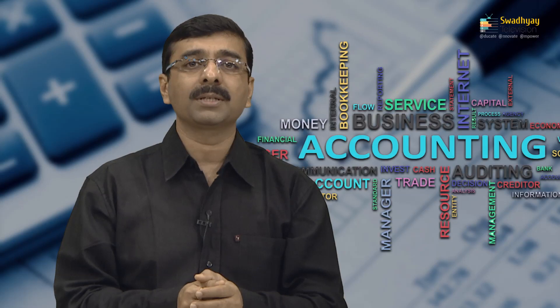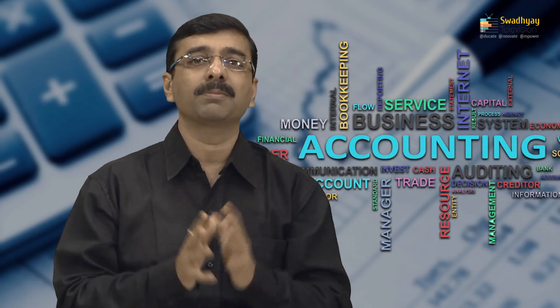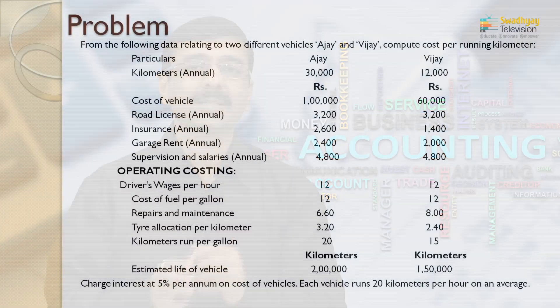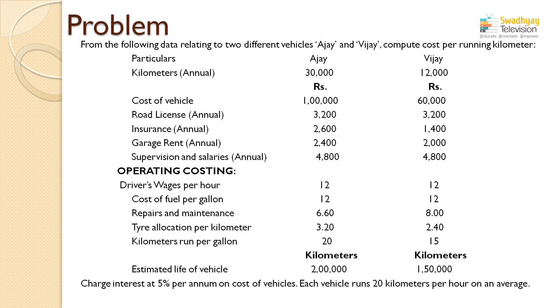Today we are going to discuss the preparation of an operating cost sheet for two different vehicles and compare their operating cost per kilometer, as per the information given in the problem. The problem states: 'From the following data relating to two different vehicles of Ajay and Vijay, compute cost per running kilometer.' Ajay runs 30,000 kilometers annually and Vijay runs 12,000 kilometers.